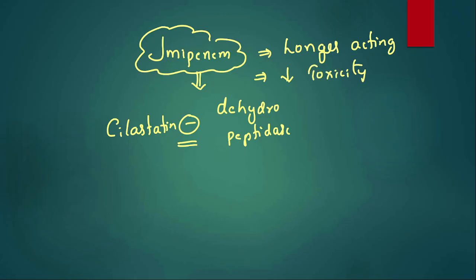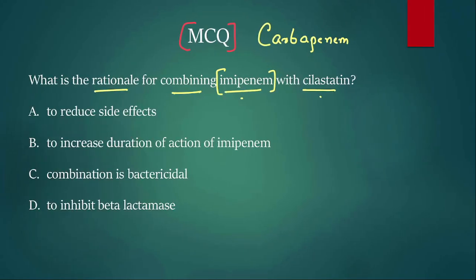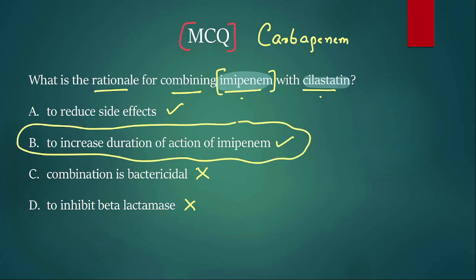Remember, all penems carry a risk of seizures, and the maximum seizure risk is seen with imipenem — so be very careful. Coming back to the question: the rationale for combining imipenem with cilastatin is to increase the duration of action of imipenem. That is the best option to choose, even though reducing side effects is also relevant.